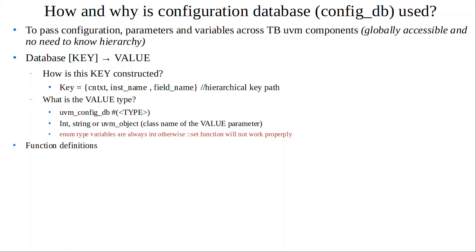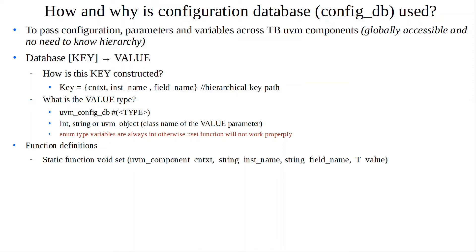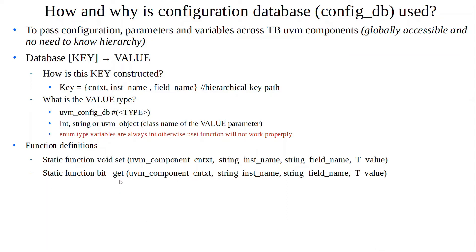Let's look at the function definitions of set and get. The set function returns nothing — it's used for storing — and takes the context, instance name, field name, and of course the value. The get function, on the other hand, is used to retrieve a particular handle. If you're successful in finding a field name already defined in the config_db, the get function returns 1; otherwise it returns 0, meaning the set didn't happen properly.